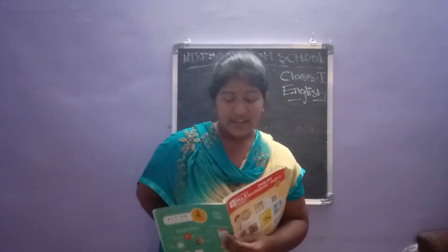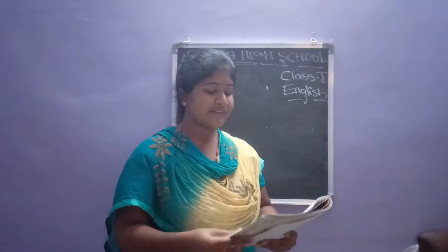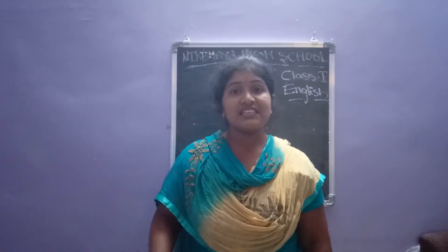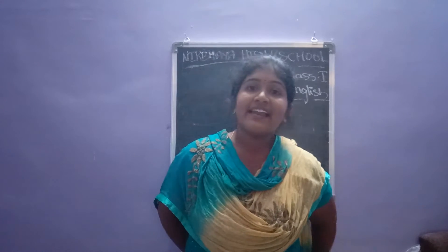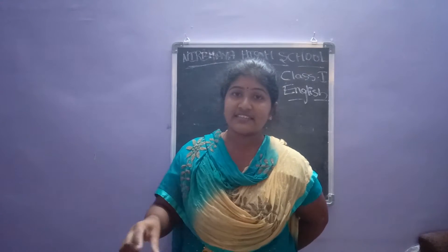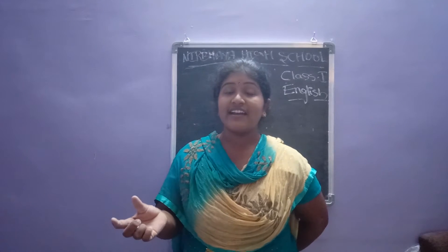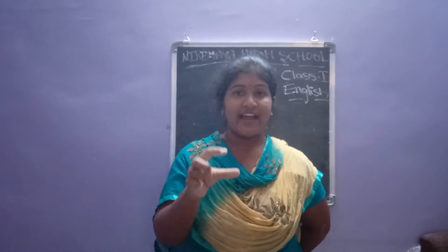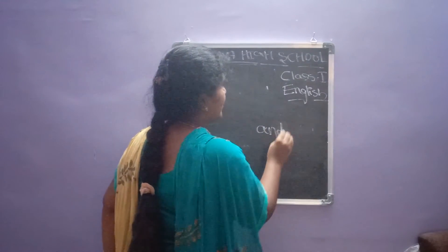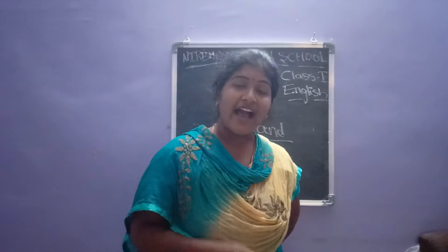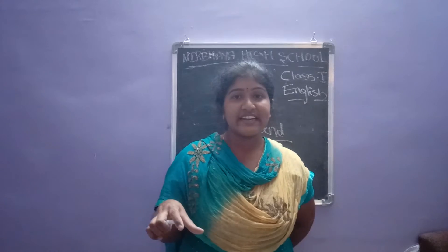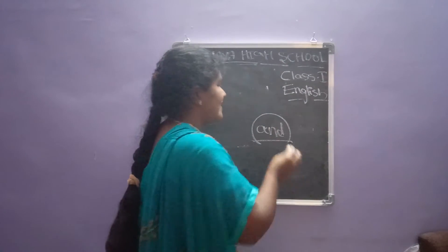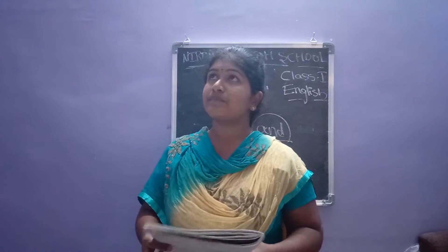Now we are discussing about the joining words. What are joining words? When we want to join sentences or words, we use these joining words. For example, I like tea, I like coffee — I have to join these sentences. I like both coffee and tea. So how am I joining them? By using 'and' — A-N-D. I like coffee and tea.